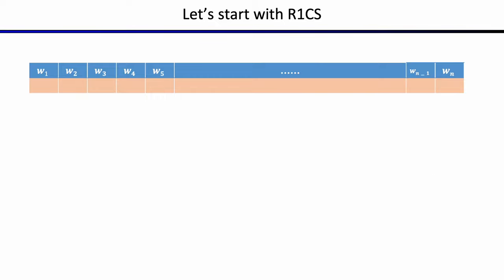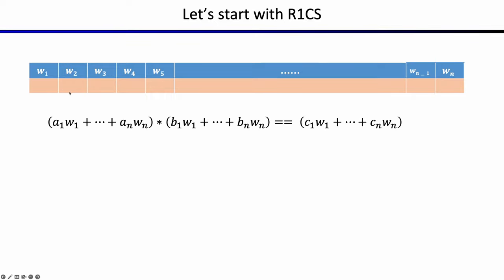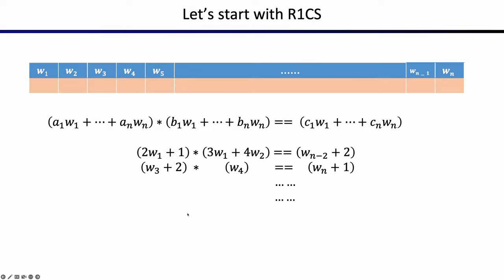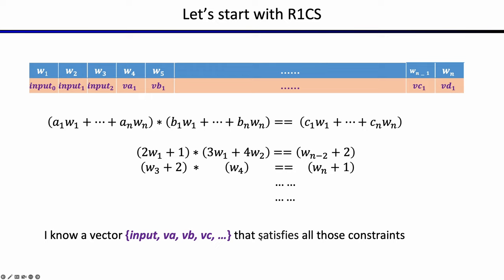Let's start with the most familiar R1CS constraint system. In R1CS, you basically need to lay out all your variables in a long array, then define your constraints over those n variables. The format is a linear combination times a linear combination equal to some linear combination. Addition is almost free here, but in each constraint the degree needs to be at most two. When proving for a concrete instance, you need to fill up all those variables with concrete values, proving that you know a vector satisfying all those constraints. Eventually, if the prover can prove that, the verifier knows that this computation for this circuit was carried out correctly.